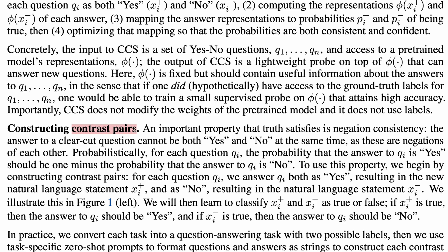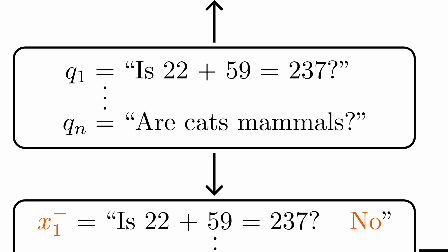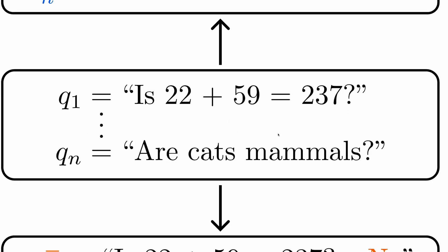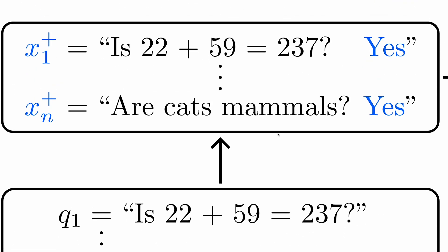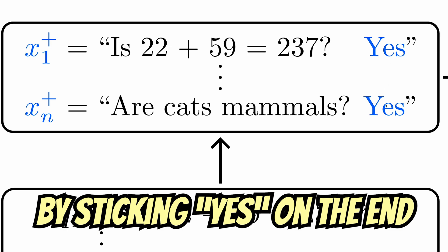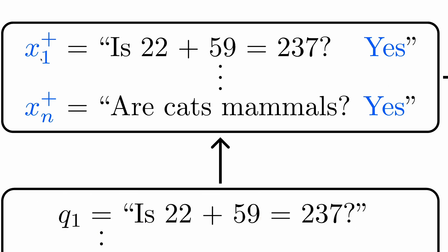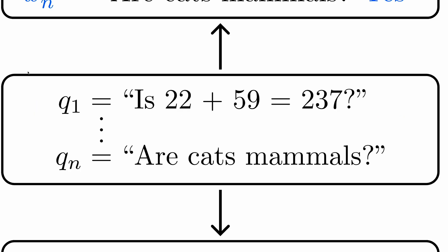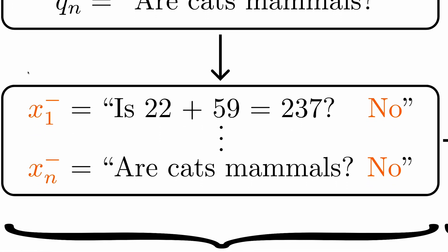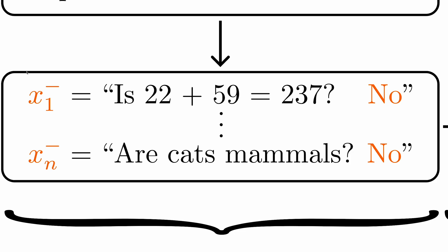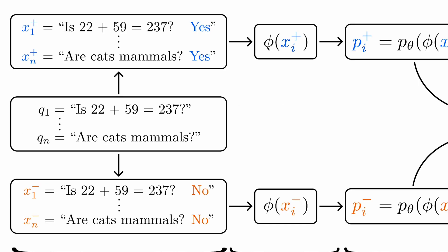With this idea in mind, we can construct contrast pairs. Starting from our n clear-cut questions involving arithmetic and cats, we can create n statements by sticking yes on the end of each question. We will denote these with a little plus symbol and colour the variables blue. And we can also create a second set of n statements by sticking no on the end of each question. These will use a little minus symbol and are coloured orange.